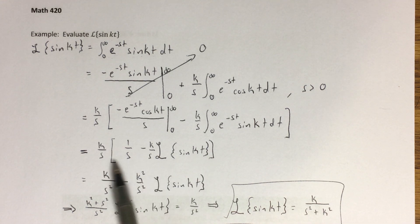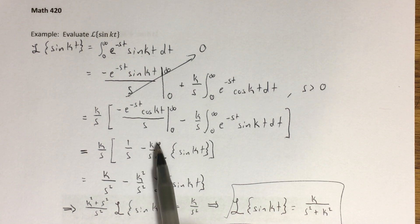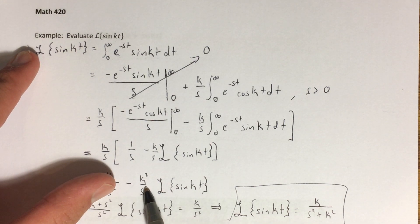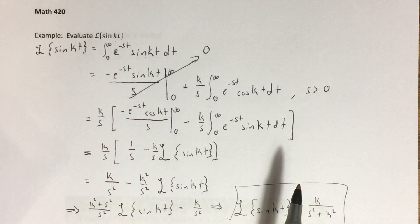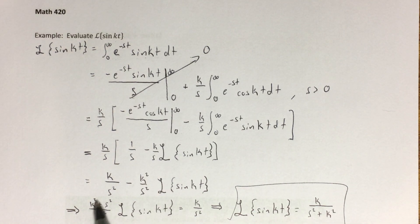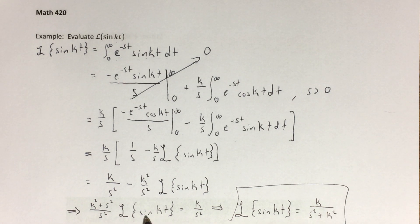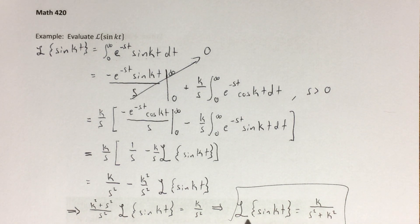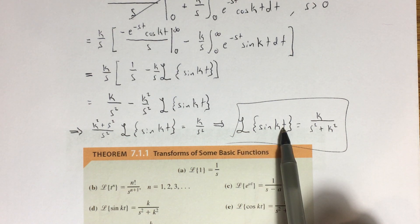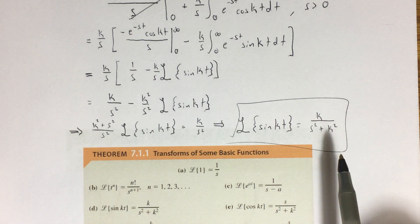The goal is to isolate L{sin(kt)}. Distributing k over s into both terms gives k over s squared minus k squared over s squared times L{sin(kt)}. Moving that term to the left side and combining over a common denominator gives (s² + k²)/s² times L{sin(kt)} = k/s². Multiplying both sides by the reciprocal yields the final result: L{sin(kt)} = k / (s² + k²).